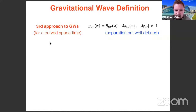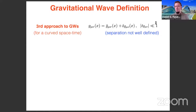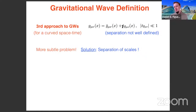This third definition is an attempt to give the most general definition of gravitational waves, at least at a perturbative level. We consider a curved spacetime in full generality and decompose the generic spacetime metric tensor into a background metric plus a perturbation. We still demand this perturbation is much smaller than one, though this decomposition is now more ambiguous. A natural approach is to introduce an epsilon parameter and count powers of it.